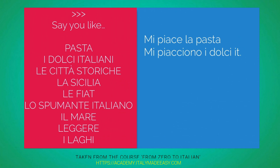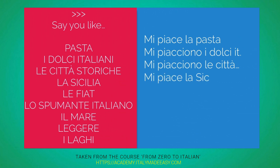How about le città storiche? Mi piacciono le città storiche. How about you like Sicily? In Italian, countries and regions also come with the article, so it's l'Italia, la Francia, gli Stati Uniti, and then the regions: la Calabria, il Lazio, la Sicilia. They always have the article, unless you're using in in front of them — like in Italia, in Sicilia — then there's no article. Mi piace la Sicilia.